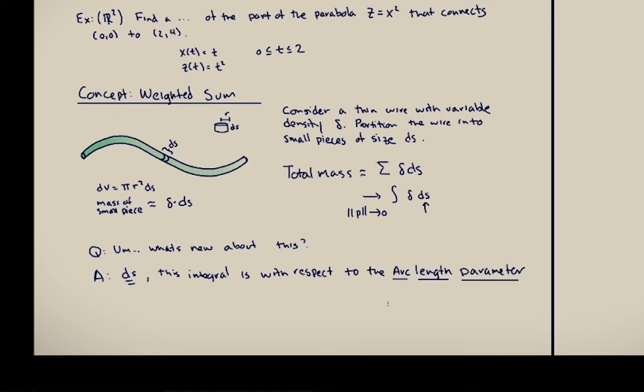So in calc 1 we were always imagining that the object that was changing was on the x axis as x moved down the x axis. And here we're imagining a particle that's moving along this line. So that's why we call it a line integral.